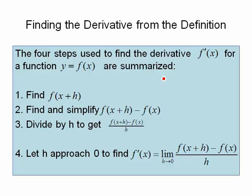The steps we just went through are summarized below. If you need to find the derivative f prime of x for a function y equals f of x: first figure out what f of x plus h is, then find and simplify f of x plus h minus f of x, put it into your quotient and divide by h doing some algebra, then let h approach 0 in that simplified form and hopefully things will drop out leaving a nice function.